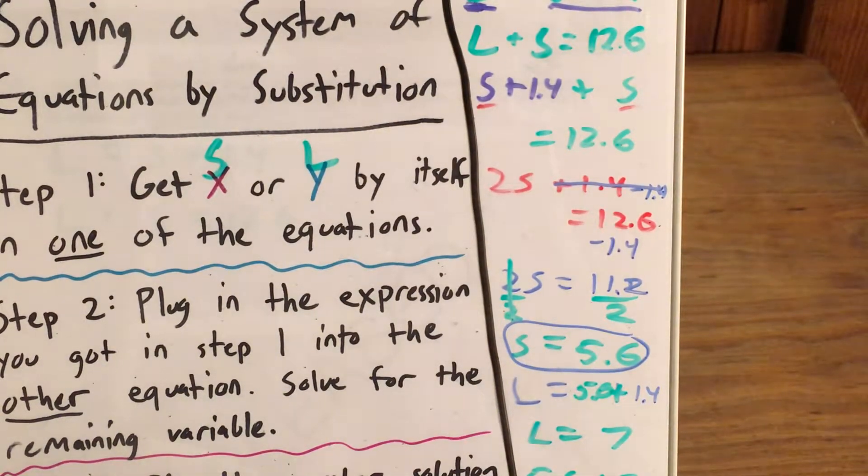So I'm happy about this because it tells me that this is the correct answer for the weight of the small dog. And now I just need to go ahead and fill this into the gridded response boxes.